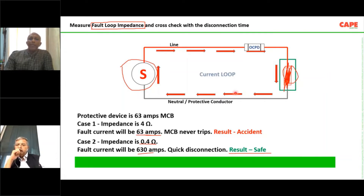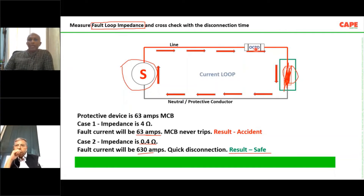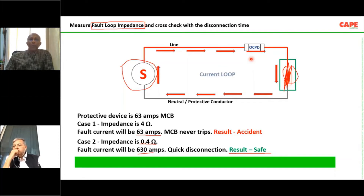There is a parameter called ultimate breaking capacity — the maximum current with which the MCB can trip safely. Imagine a 32A 6kA MCB: if the fault current exceeds 6kA, the MCB may blast because the fault current is too high. So the fault current can be neither too low (won't trip) nor too high (MCB explodes). We have to select the system carefully so that both cases are avoided.